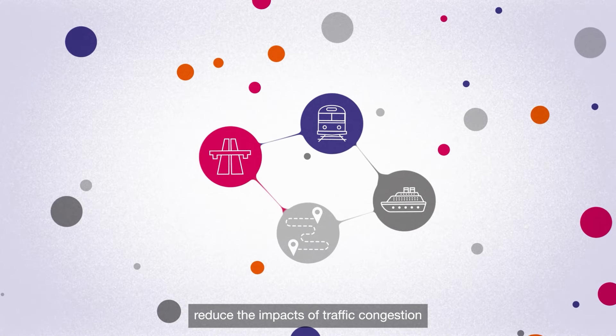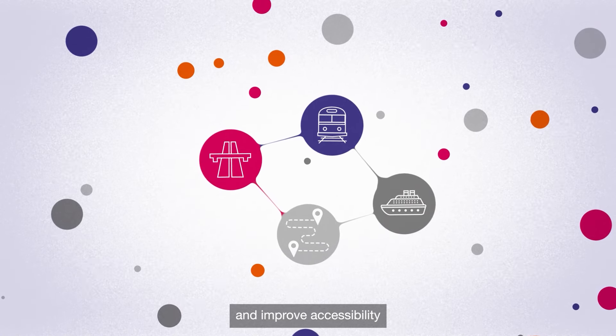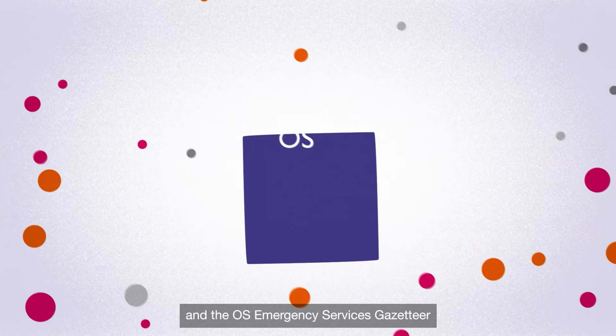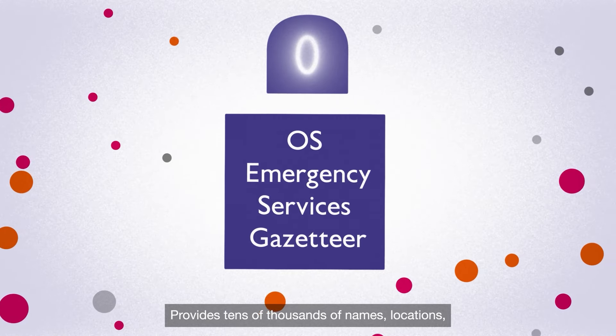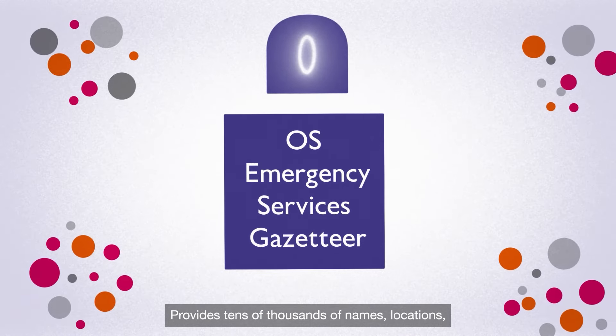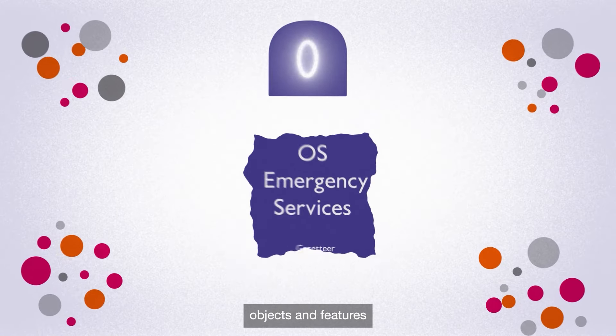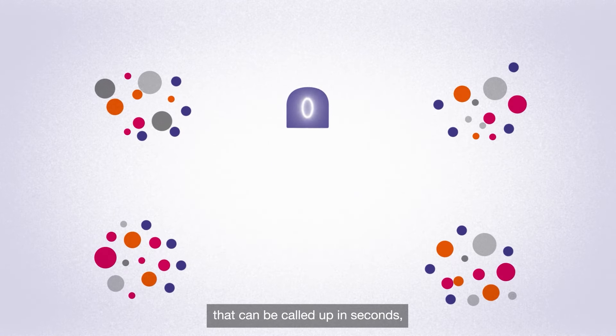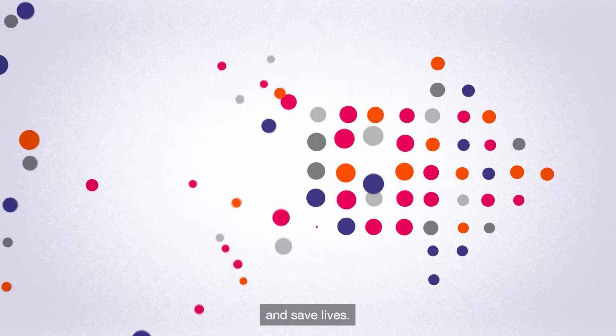to help government reduce the impacts of traffic congestion and improve accessibility. And the OS Emergency Services Gazetteer provides tens of thousands of names, locations, objects and features that can be called up in seconds, helping reduce emergency response times and save lives.